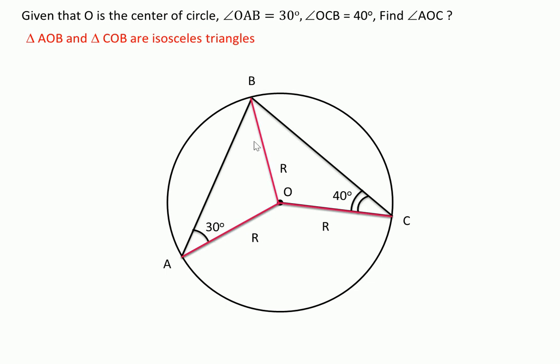OBA is also 30 degrees. We have another triangle, in fact COB. In this triangle, two sides are equal. OC and OB are equal because they are the radius. It means this triangle is also isosceles triangle.